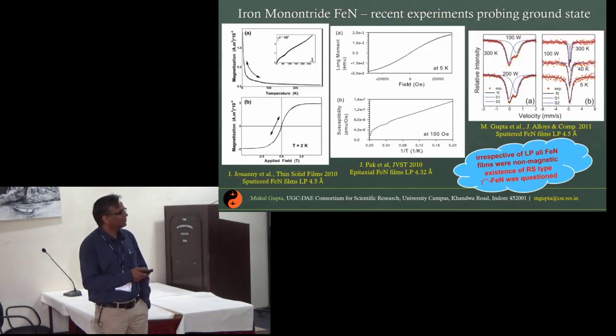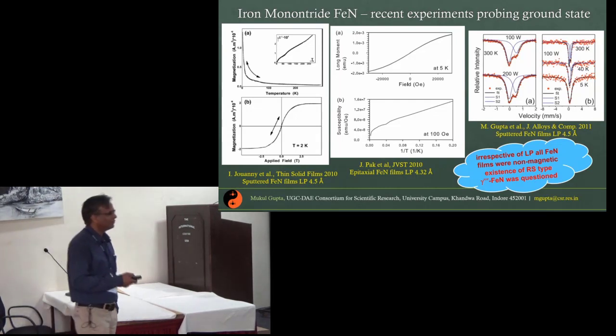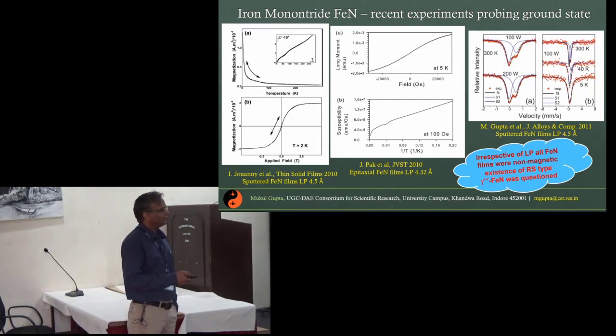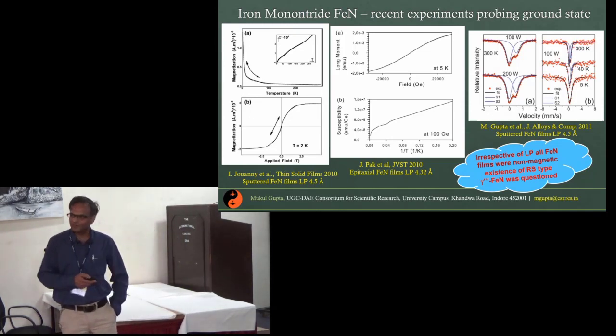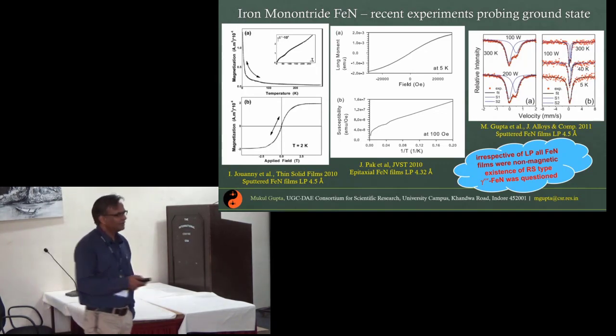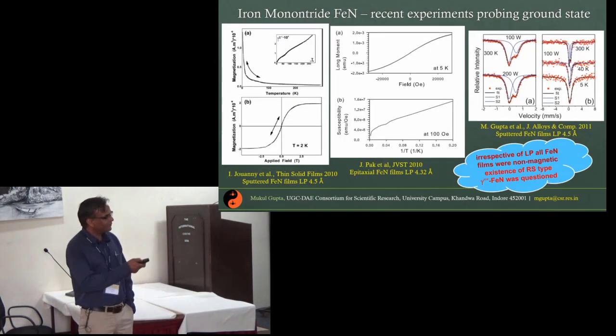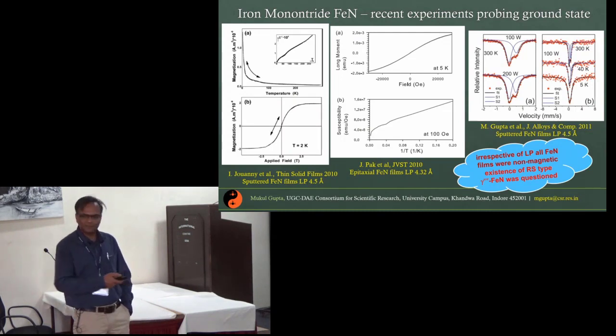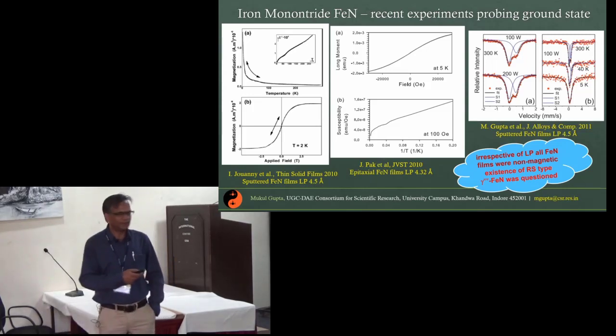Thereafter some more serious efforts have been made to understand the magnetism of iron mono-nitride films. There are two types of phases: one having a rock salt type structure with a lattice parameter of about 4.5, other is zinc blende type structure with smaller lattice parameter around 4.3. From these works, it has been found that irrespective of the lattice parameter, the films are always non-magnetic at room temperature.